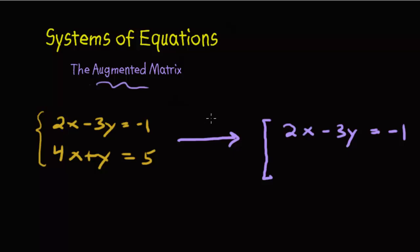Now, the augmented matrix, it's going to represent this equation, but it's just going to get rid of the variables, anything that's not a number. Okay, so x is a letter, y is a letter, and the equals sign is a symbol. All right, so what we want is we want to keep the 2, the negative 3, and the negative 1.